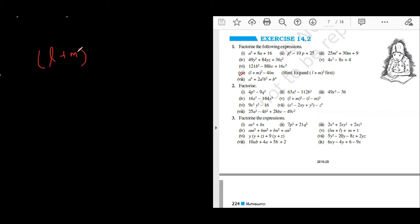Seventh part: l plus m whole square minus 4lm. When there is no property happening, so make sure you open it first. a square plus b square plus 2ab minus 4lm is already there. These two are like terms, so we will solve them.